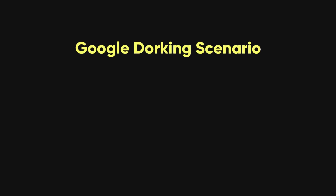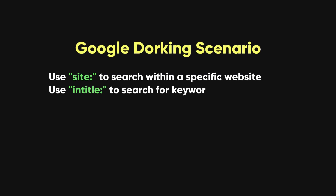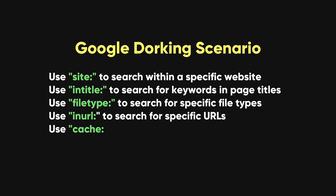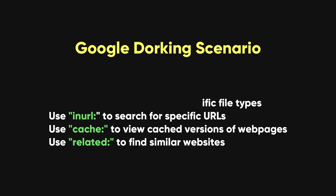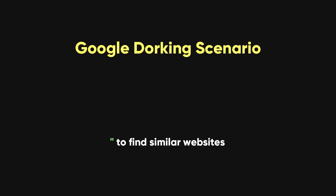Here's a sample scenario using Google dorking. Use the site operator to search only within the company's website. Utilize the intitle operator to find pages with specific keywords in the title — this can uncover potential login pages vulnerable to attack. Employ the filetype operator to search for specific file types to find documents or reports with sensitive info. Use the inurl operator to find specific URLs and potential admin pages vulnerable to attack. Utilize the cache operator to view Google's cached version of a web page, letting you see page contents even if the original is removed. Lastly, use the related operator to find similar websites, which can reveal potential partners or vendors with access to the company's network.